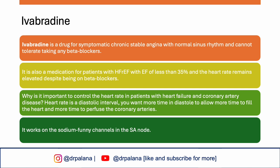Another medication to keep in mind for stable angina is ivabradine. Ivabradine is a drug for symptomatic chronic stable angina with normal sinus rhythm in patients who cannot tolerate beta blockers. It is also used in patients with heart failure with reduced ejection fraction with an EF of less than 35% whose heart rate remains elevated despite being on beta blockers. It works by controlling heart rate — more time in diastole allows more time to fill the heart and perfuse the coronary arteries. It acts on the sodium funny channels in the SA node.